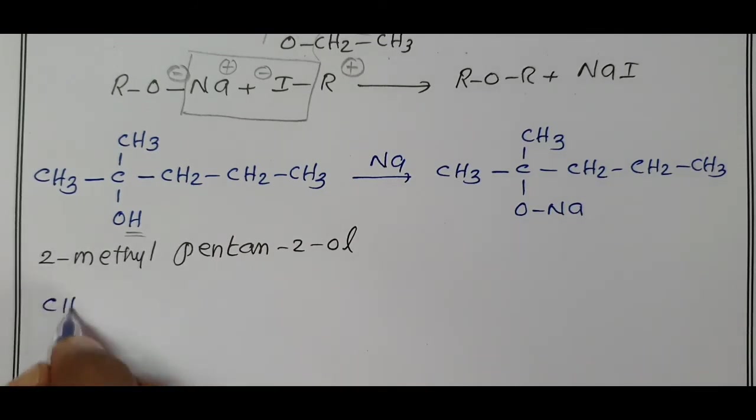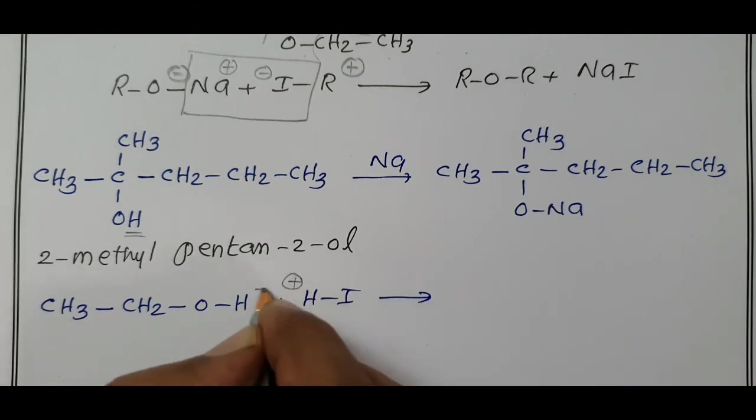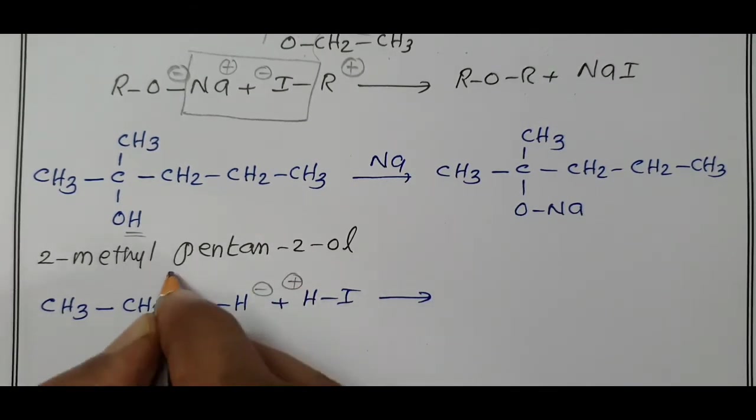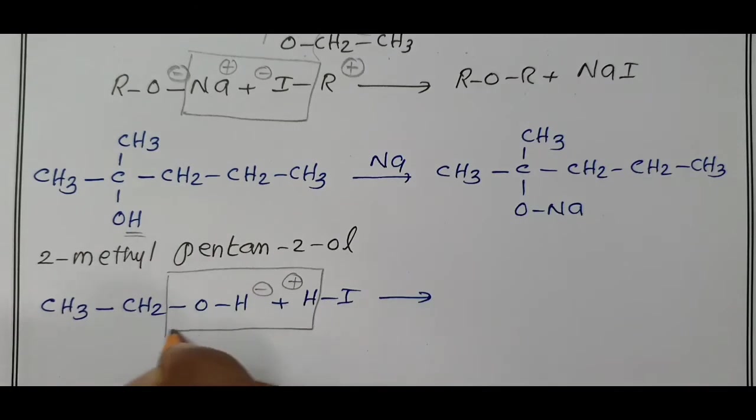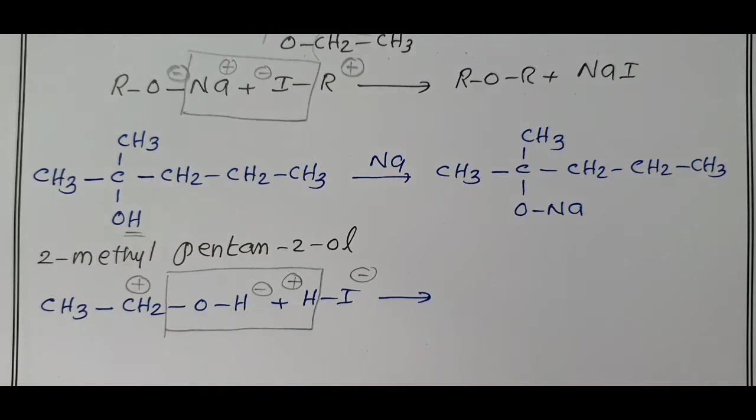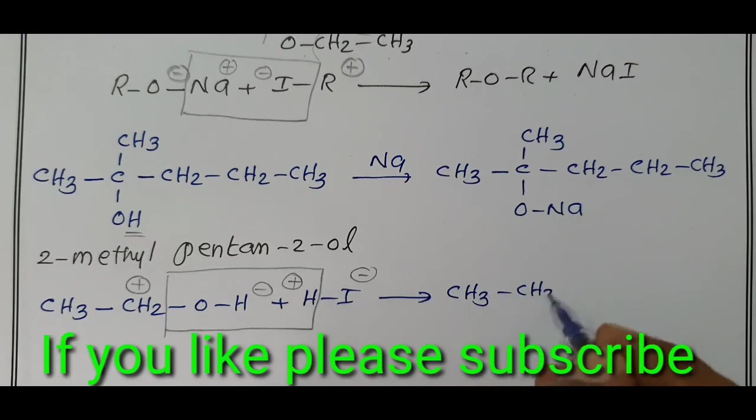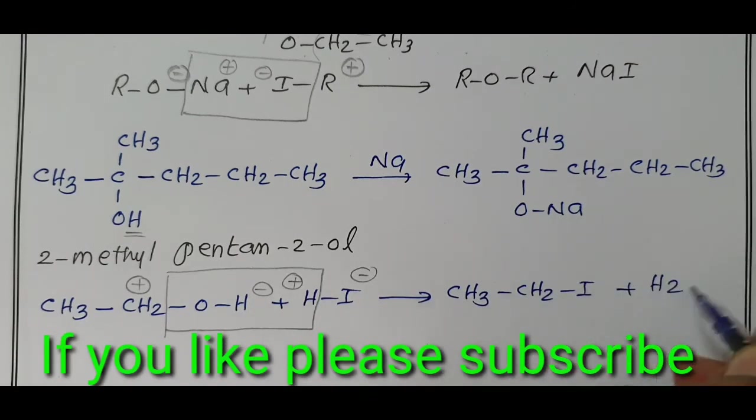CH3, CH2, OH, ethyl alcohol, ethanol, when treated with HI, hydrogen iodide. What happens, H plus OH minus, removed as H2O, H plus OH minus, removed as H2O, I minus is added to carbon plus, gives ethyl iodide, CH3, CH2, I plus loss of H2O.